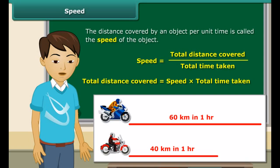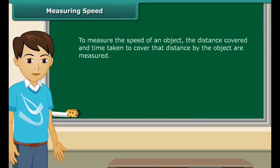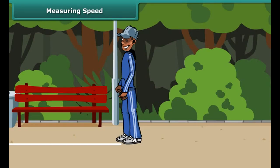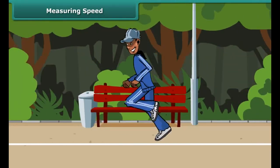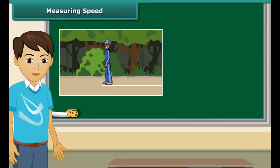Suppose your brother claims that his motorbike is faster than his friend's, but his friend denies. Your brother's motorbike covers a distance of 60 km in an hour, whereas his friend's bike covers 40 km in one hour. The speed of your brother's bike is 60 km per hour and that of his friend's bike is 40 km per hour. Your brother's bike is certainly faster than his friend's because its speed is greater.